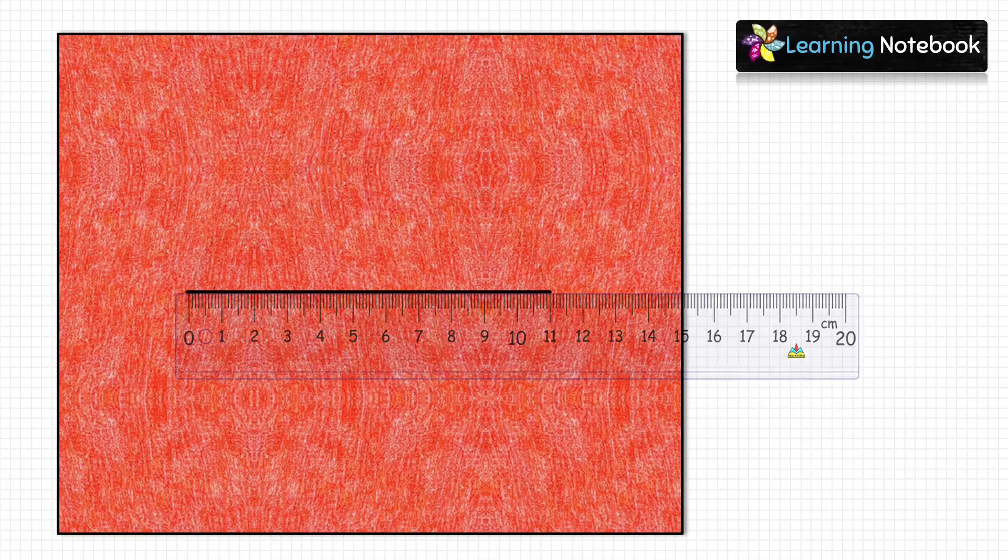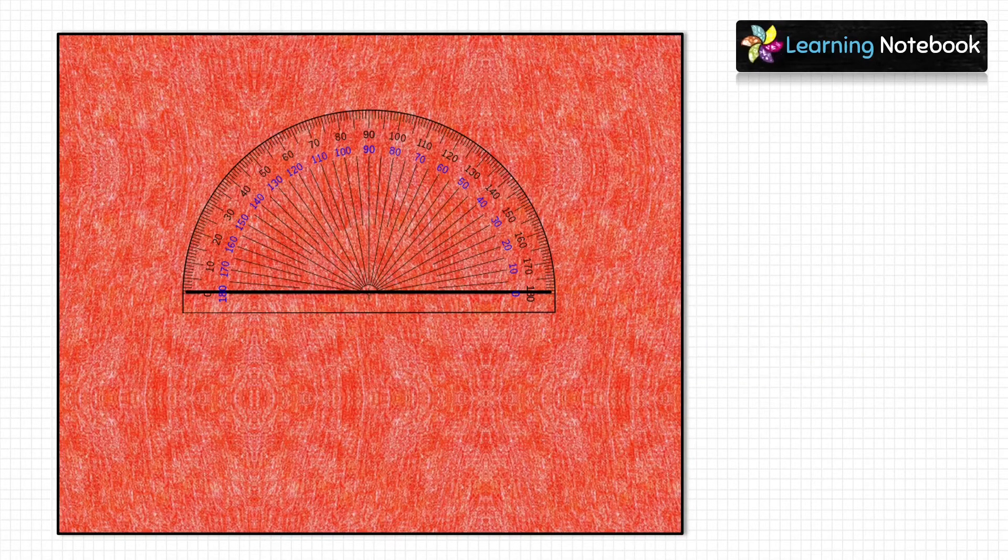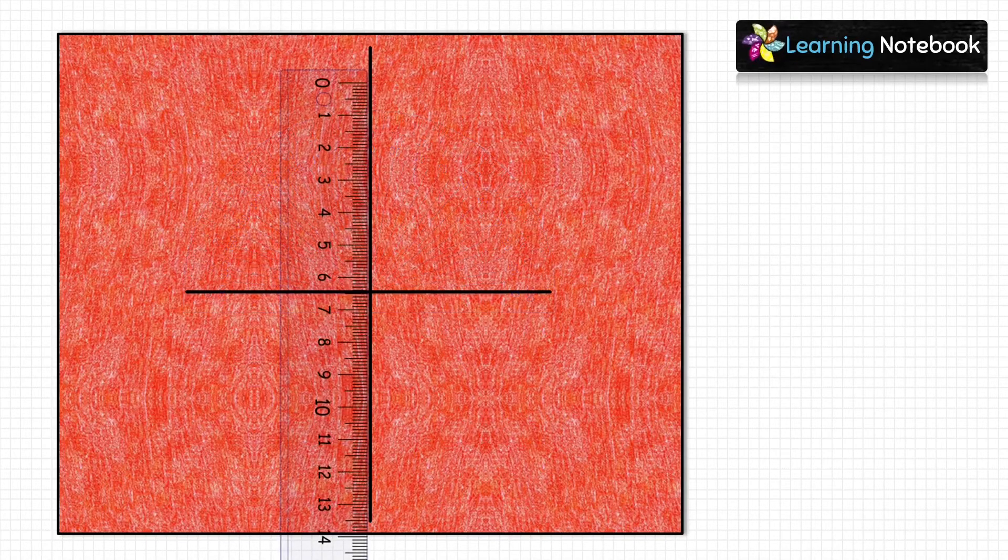Now students, keep the protractor at the midpoint and draw an angle of 90 degrees. Next let's keep the scale on this line such that the midpoint is at 6.5 centimeters, and then mark the two points at 0 and 13 centimeters.